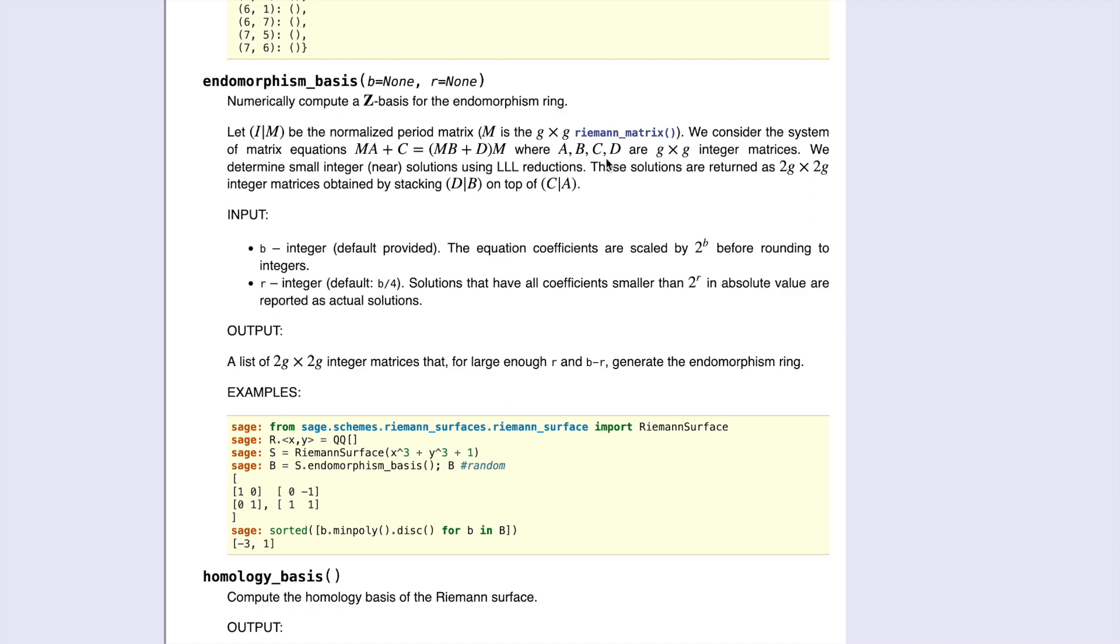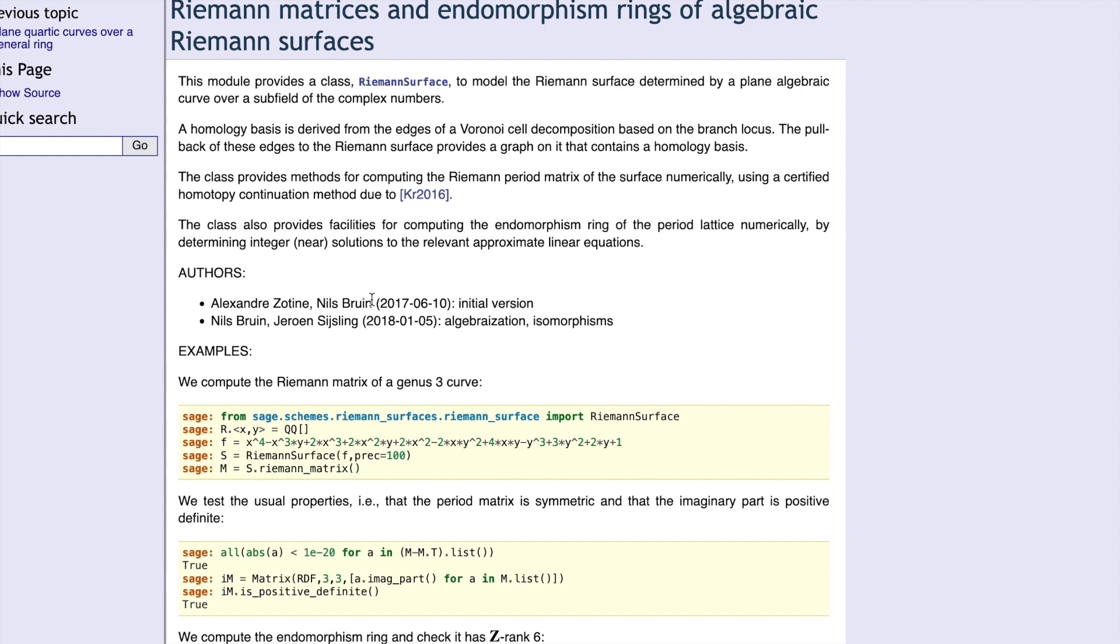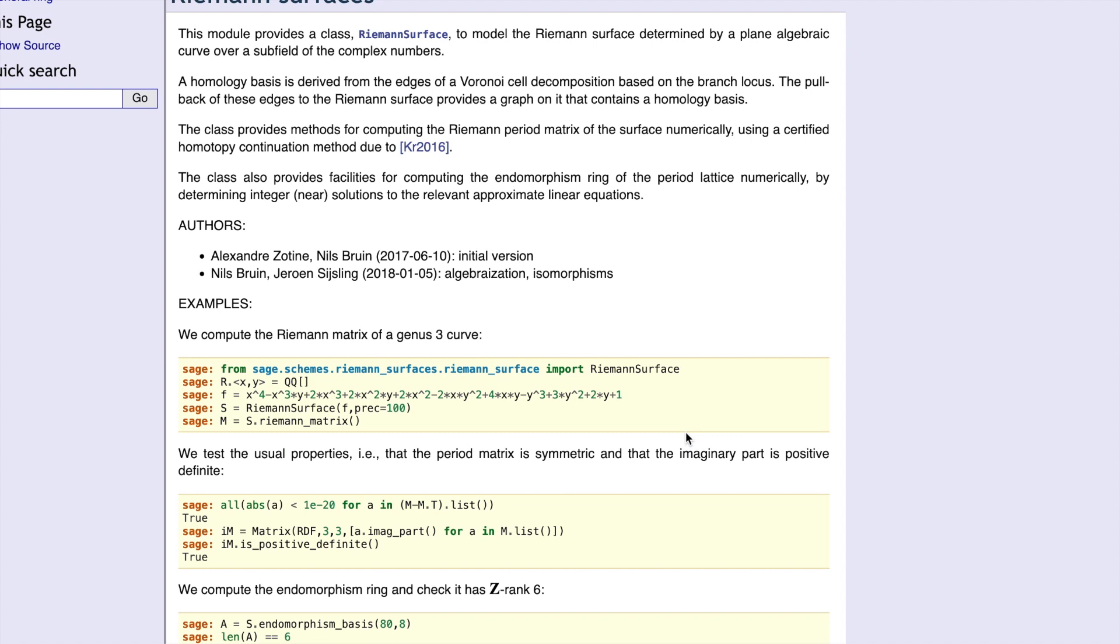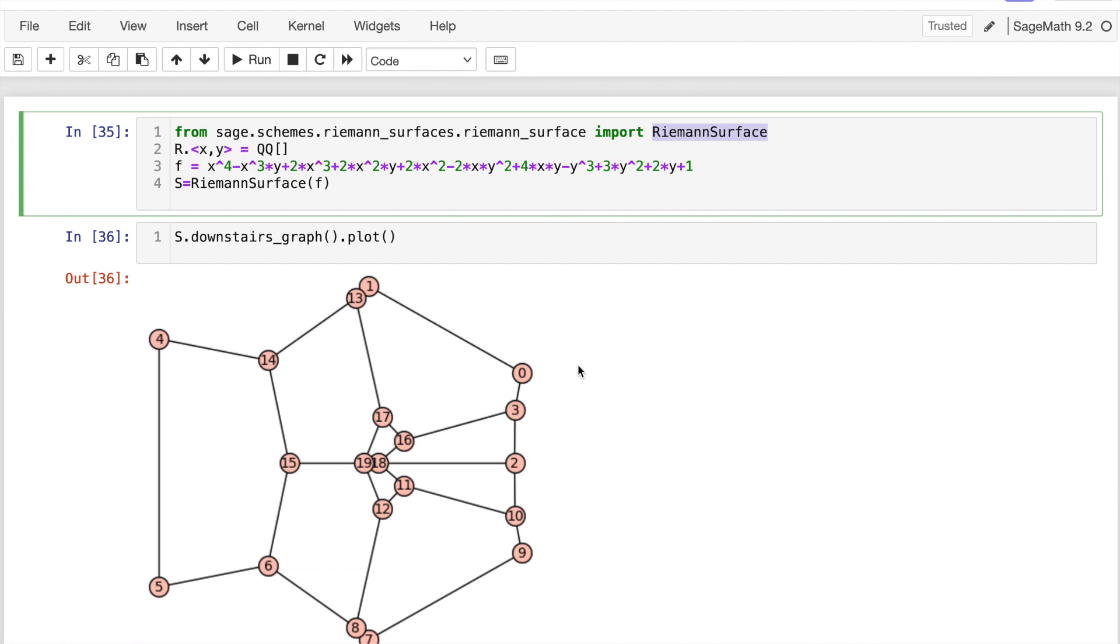This was written by Molin, Neurohr, and Schiavone. While it can do many things, some of them I will show you in the next lectures. But today, we're talking about finding these loops, this homology basis.